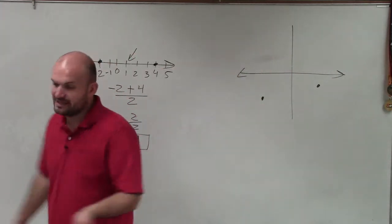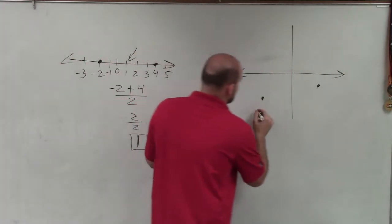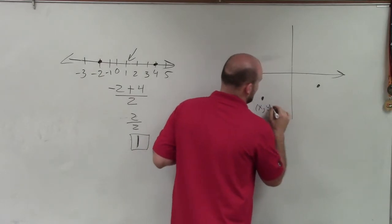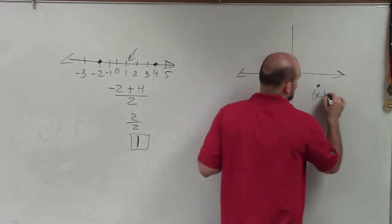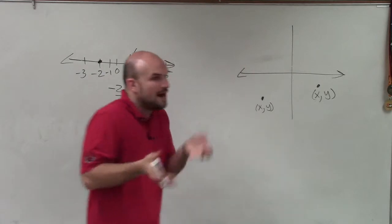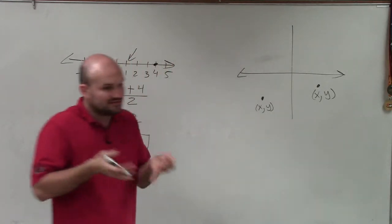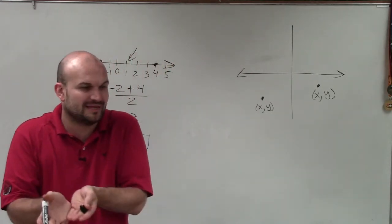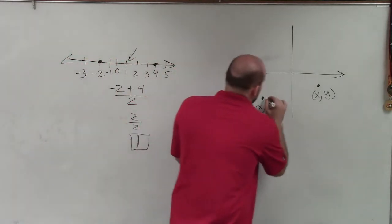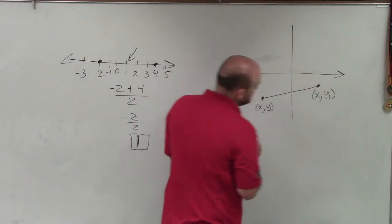Now, the first thing we need to do is understand that these are coordinate points. That means they have an x-coordinate and a y-coordinate. This one has an x-coordinate and a y-coordinate. So how am I going to find the middle? To find the middle, I need to know the middle has to be lying on some line between them.